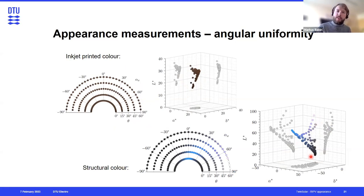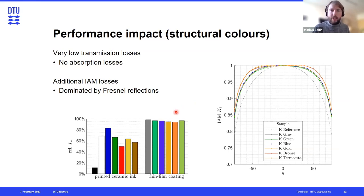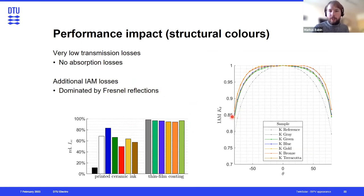Structural colors have, however, a much lower performance impact. While they might not look as universally nice because of this special nature of reflections, they have much lower — almost no — absorption losses and therefore very low transmission losses. The efficiency of these samples is above 90 or 95%. However, since they rely on Fresnel reflections, they still have additional IAM losses, which can amount to up to 5% in total performance over a full year, depending on installation location.